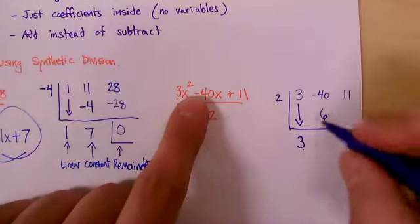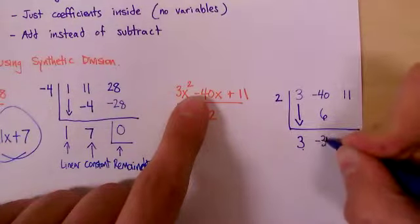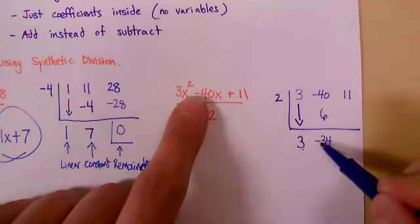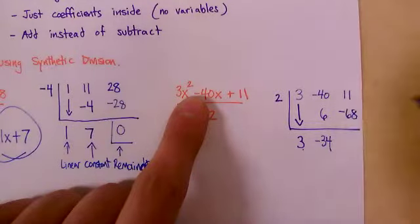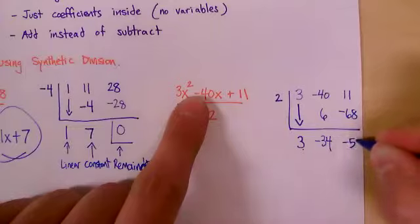You do this times this, two times three is six. You add those together, negative 40 and six is negative 34. Two times negative 34 is negative 68. 11 plus negative 68 is going to be negative 57. Problem's done.